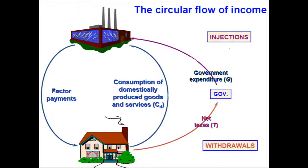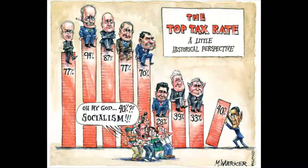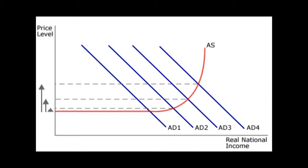They do this by using injections and withdrawals. Injections consist of government spending, and withdrawals consist of taxing corporations and households. Let's look at it like a bucket with a hole — the government pours water, which is the government spending, into the bucket, while the hole in the bottom is the taxes, which decreases the amount. By increasing or decreasing government spending and taxes, they can shift our aggregate demand left and right, which allows them to manipulate inflation rates.